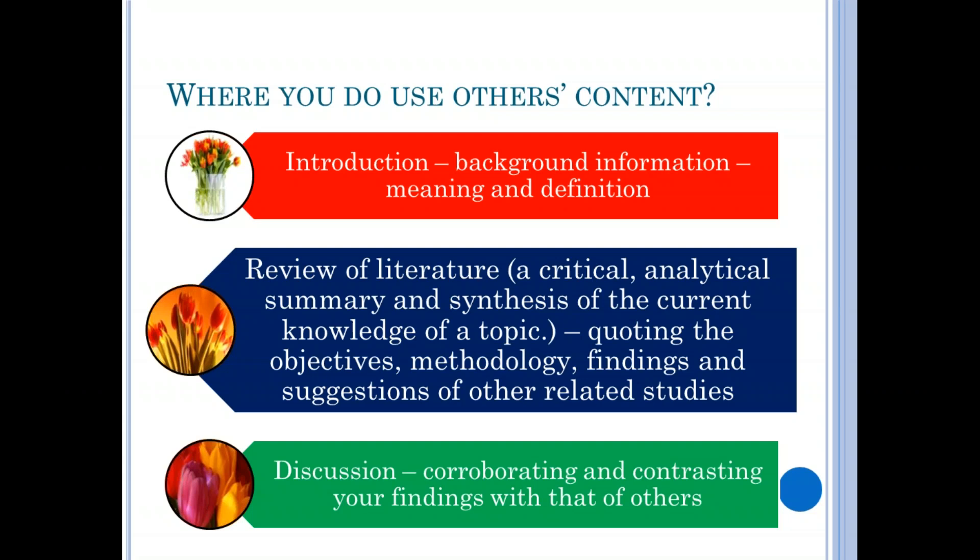If you want to do a review of literature, naturally you have to take the research outputs of others. Once you have your findings, you need to write a discussion — informing readers to what extent your findings align with, or contrast and disagree with, the findings of others. So whether for the introduction, the review, or the discussion section, for all three parts you have to borrow the ideas and content of others and trace what was already done by previous researchers.